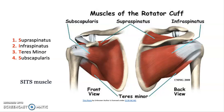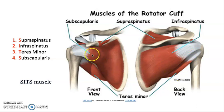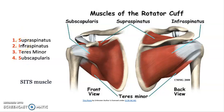The names of these muscles are supraspinatus, infraspinatus, teres minor, and subscapularis. They are also referred to as the SITS muscles, referencing the first letter of their names. I hope this mnemonic SITS will help you to remember their names easily.